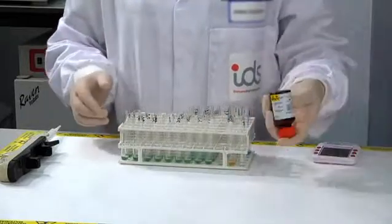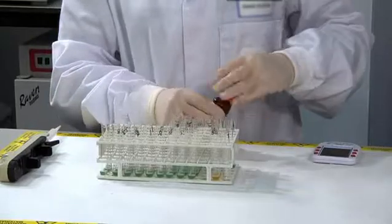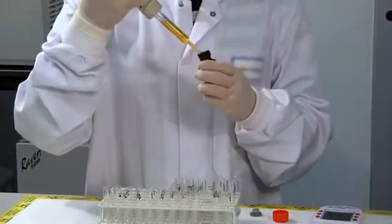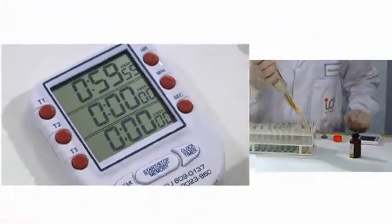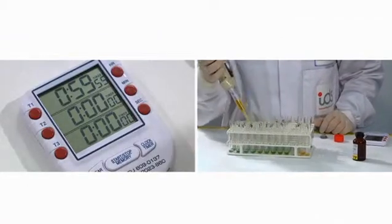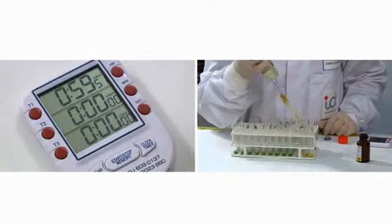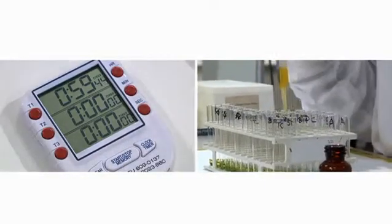Remove tubes from fridge. Immediately add 200 microliters of room temperature tracer to all the tubes. Remember to start timer on addition of tracer to the first tube. This will ensure that incubation time is exactly one hour. It's important to start timer immediately upon addition of tracer to the first tube.